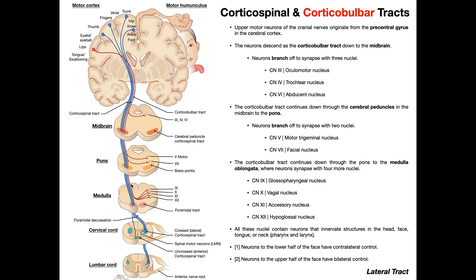There are no upper motor neurons of the corticobulbar tracts that actually enter the pyramids or the pyramidal tracts. These are going to get off at a stop in the medulla, superior to where the corticospinal tracts enter those pyramids — which, remember, is where 90% of them decussate to the other side. We have four sets of upper motor neurons here: some synapsing with cell bodies of the glossopharyngeal nucleus, some with the vagal nucleus containing cell bodies of the vagus nerve, some with the accessory nucleus containing cell bodies of the accessory nerve, and some with the hypoglossal nucleus containing cell bodies of the hypoglossal nerve.